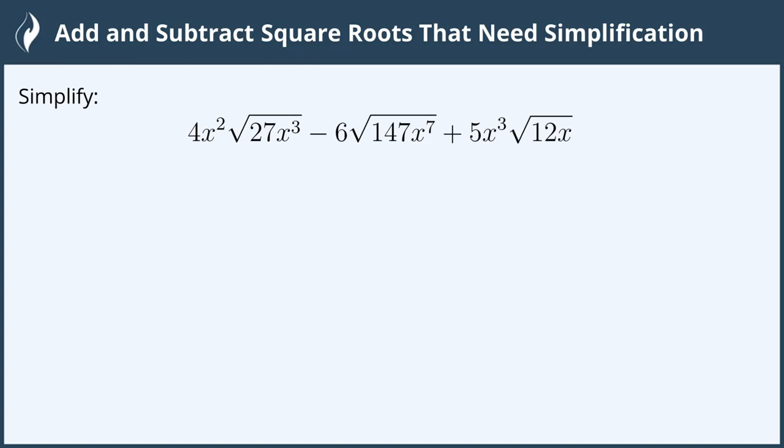Hi everyone! In this video we will add and subtract square roots that need simplification. Simplify 4x² times the square root of 27x³ minus 6 square roots of 147x⁷ plus 5x³ times the square root of 12x.